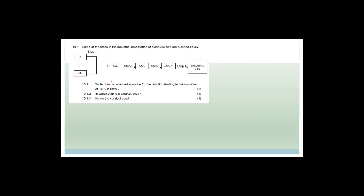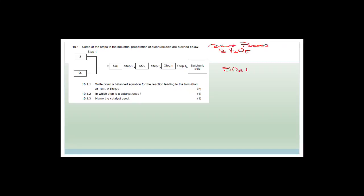Now we're talking about the industrial preparation of sulfuric acid, which is called the contact process. The reason it's called the contact process is because it comes into contact with vanadium pentoxide. The question asks us to write down the balanced equation for the reaction leading to the formation of SO₃ in step two. We've got SO₂ and we're ending up with SO₃ — all we're doing is reacting it with oxygen again to form SO₃.